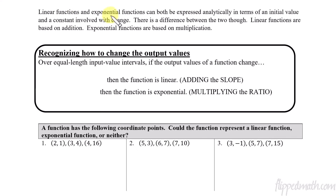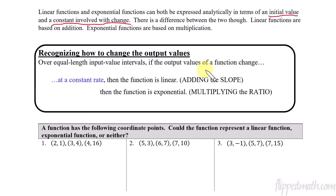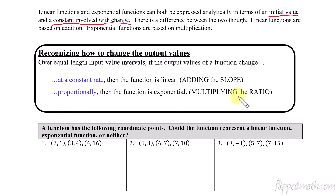We have similarities with linear and exponential functions — specifically the idea of having an initial value as well as a constant that involves change. The difference is that with a linear function it's based on addition, while with exponential functions it's based on multiplication. If the output values are changing at a constant rate with equal-length input values, then the function is linear. If you have equal-length input values and the function is changing proportionally — meaning you're multiplying the same ratio over and over — then the function is exponential.